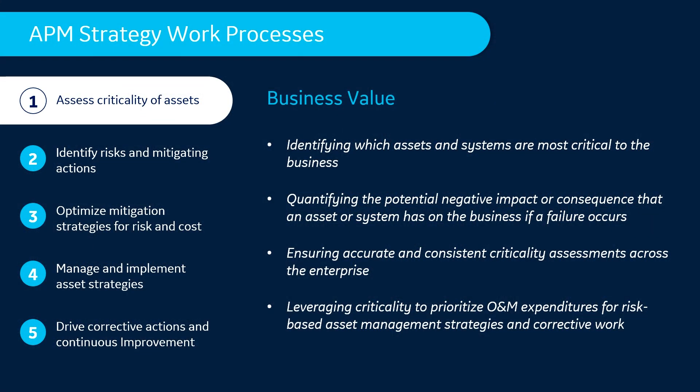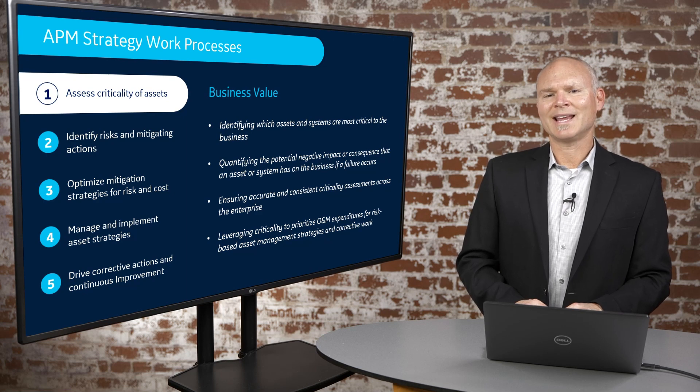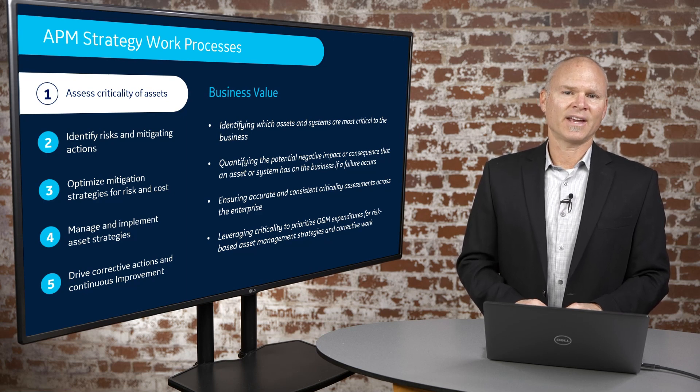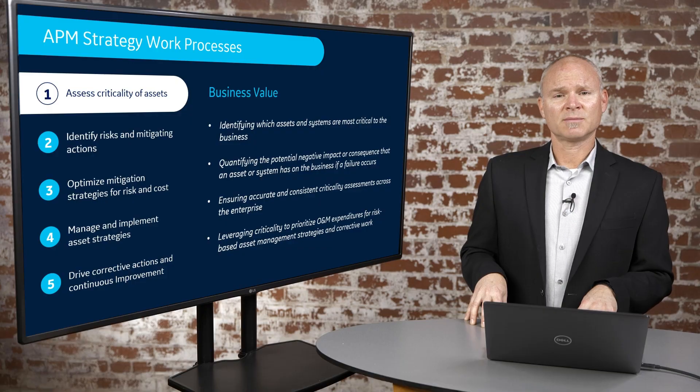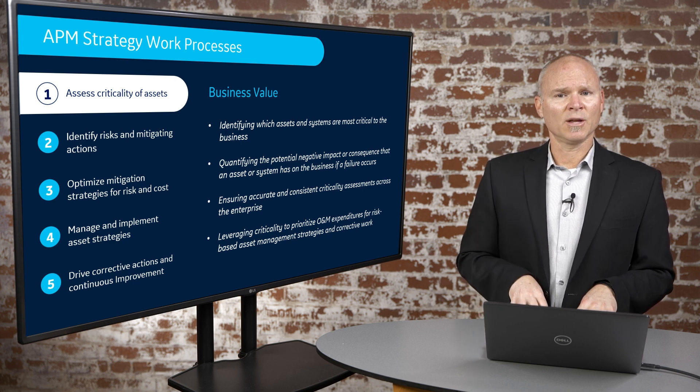The first step in the APM Strategy work process is around the definition of criticality — performing criticality assessments to define what the potential negative consequence and impact of an asset failing would be on our organization. That could be from a health and safety standpoint, an operations standpoint, or whatever other factor is deemed associated with our corporate risk structure.